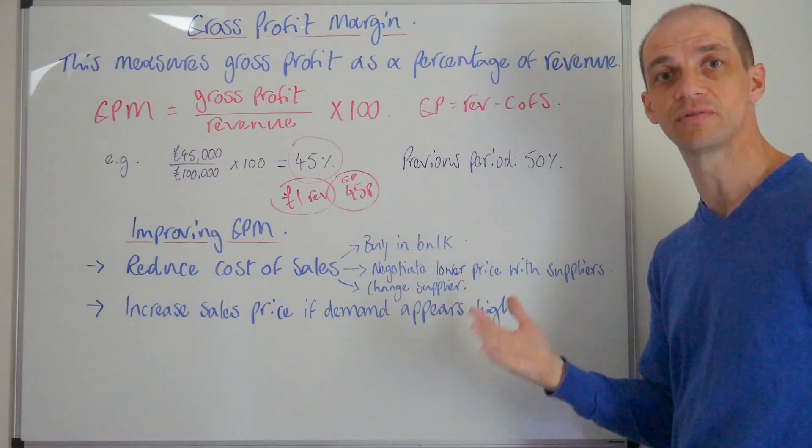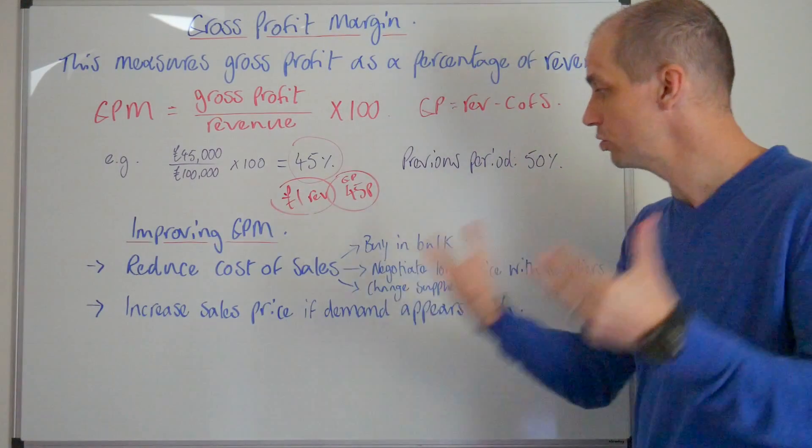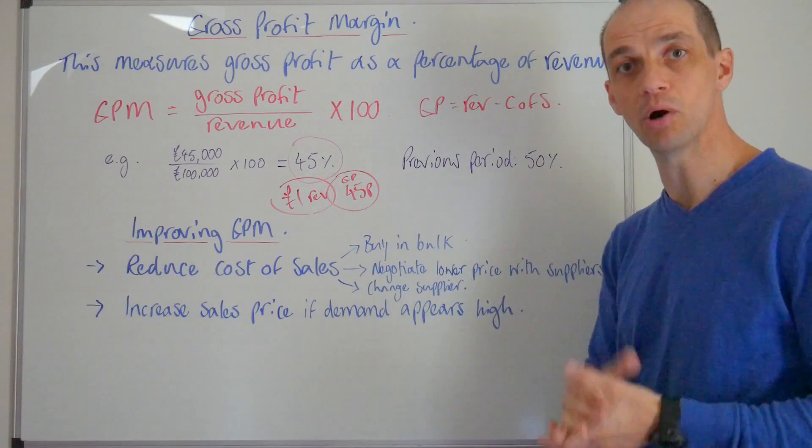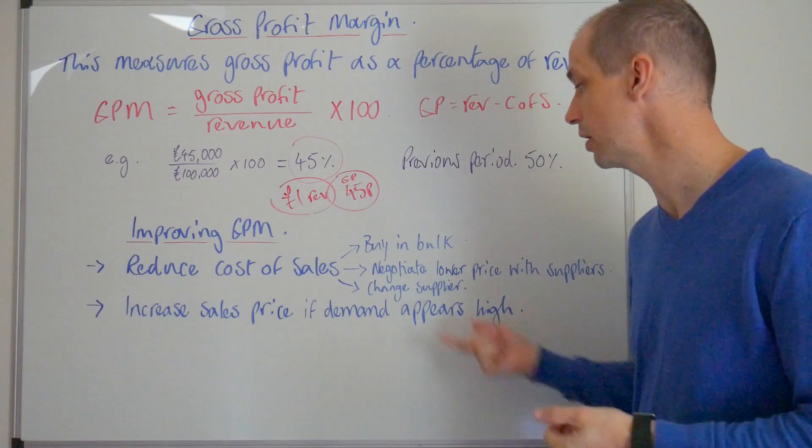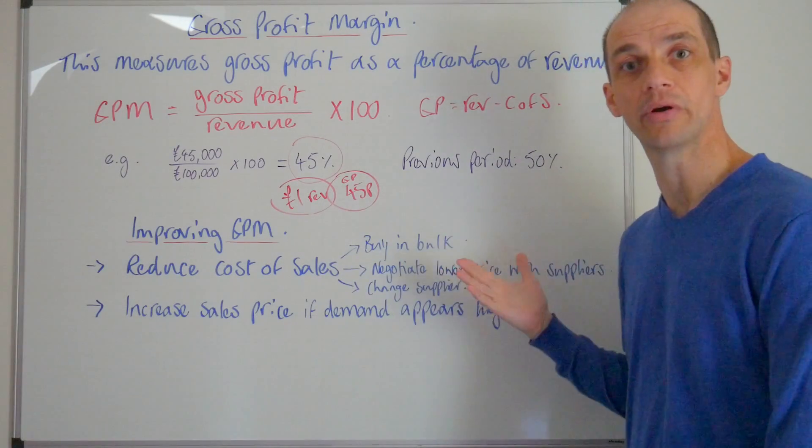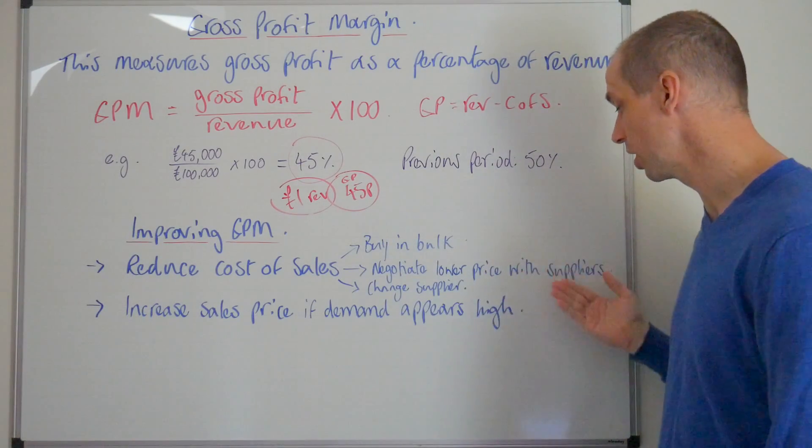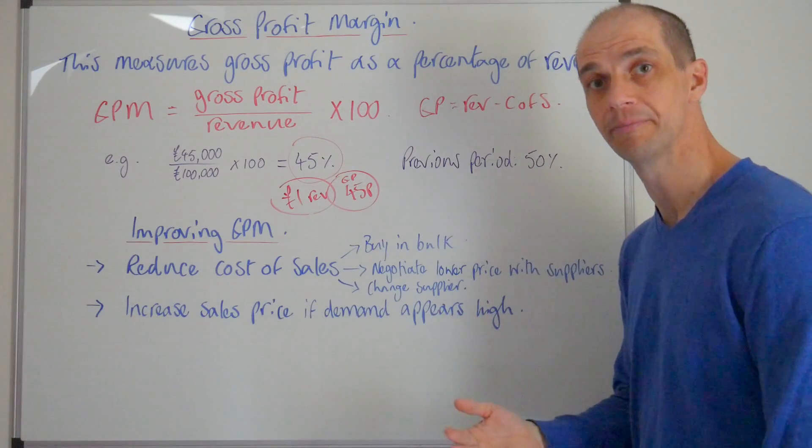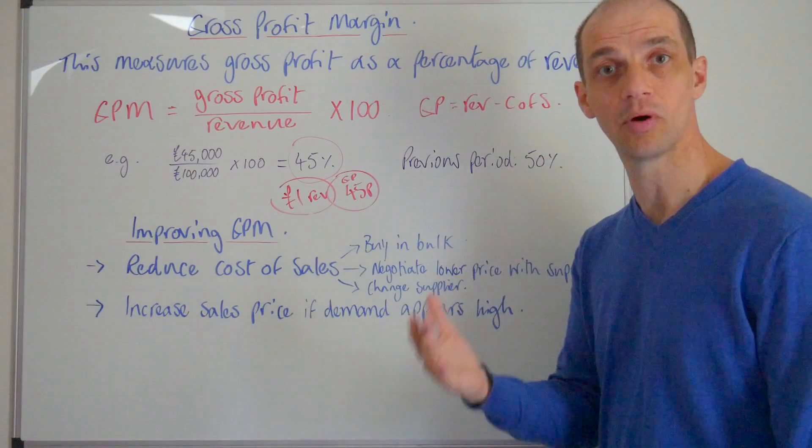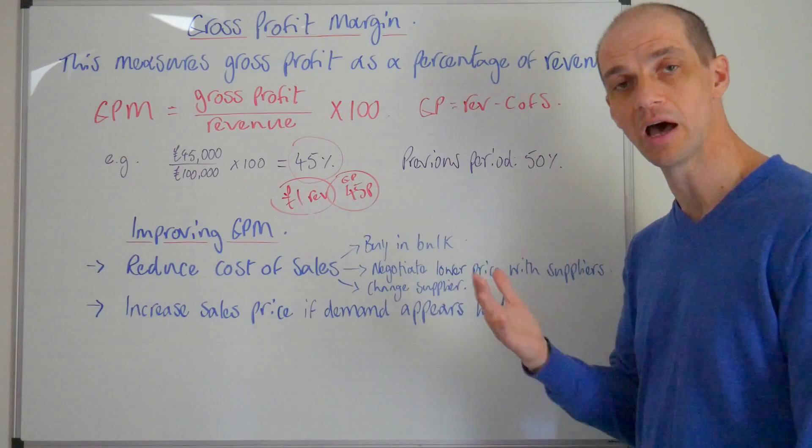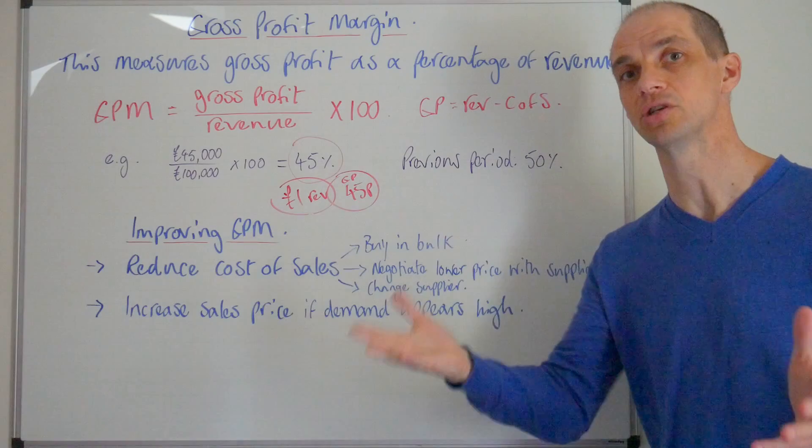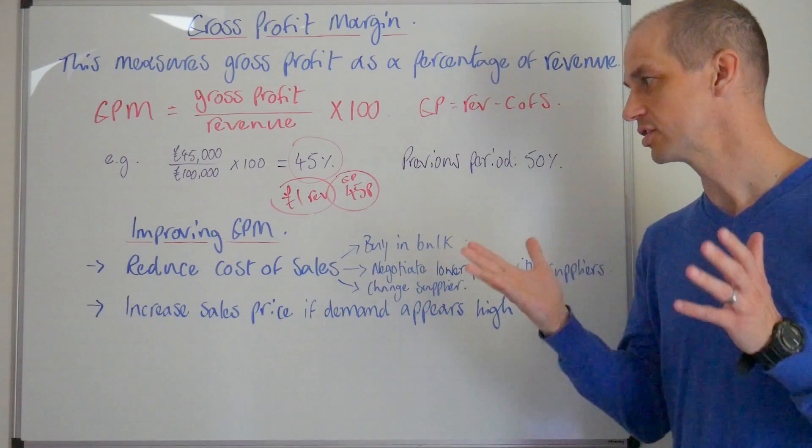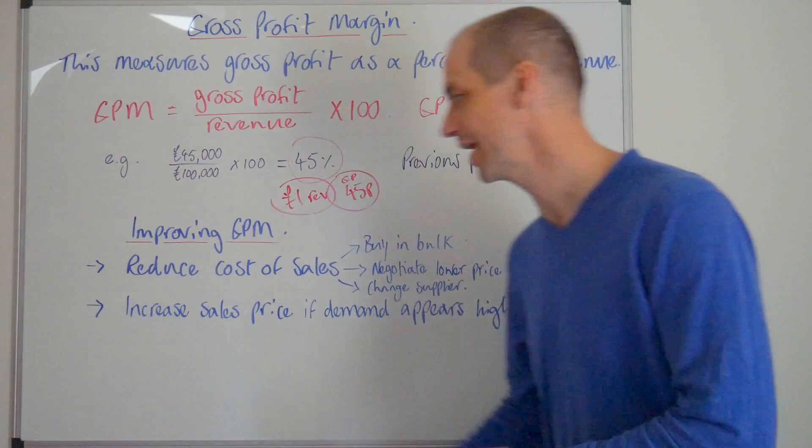Firstly you could reduce the cost of sales. So you could reduce the cost of sales by buying in bulk, that may enable you to get a better price of the products. Or you could go to the supplier and actually negotiate a lower price with your supplier. Alternatively you could change suppliers and maybe even find a lower price supplier, but of course you don't want to substitute quality there, so that's an important consideration to make.